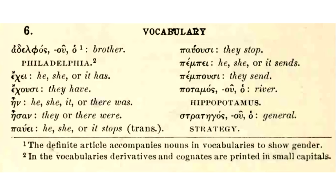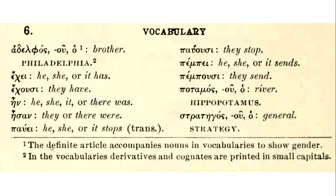One last point of grammar: the article within Greek is only ever the definite article — the word 'the' in English translation. There's no indefinite article within Greek; we don't have an explicit word for 'a' or 'an,' so that is often something you will have to restore within your translation. For example, a Greek phrase that basically just says 'has brother' would require us to restore 'he' and 'a' to get the English sense: 'he has a brother.'